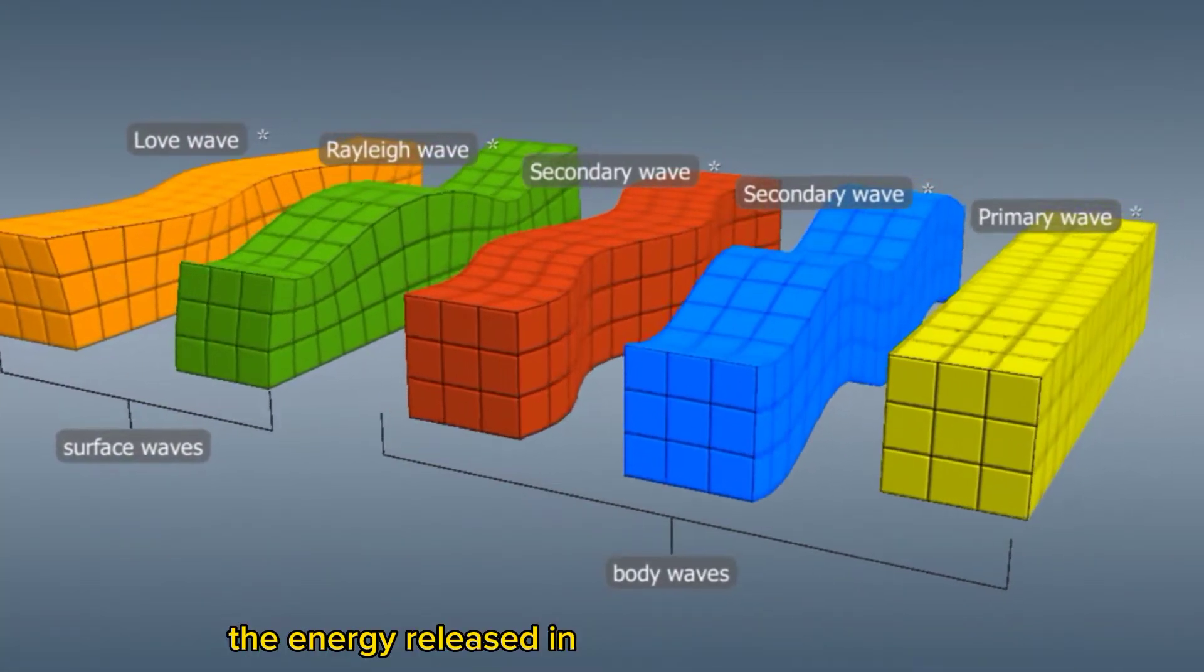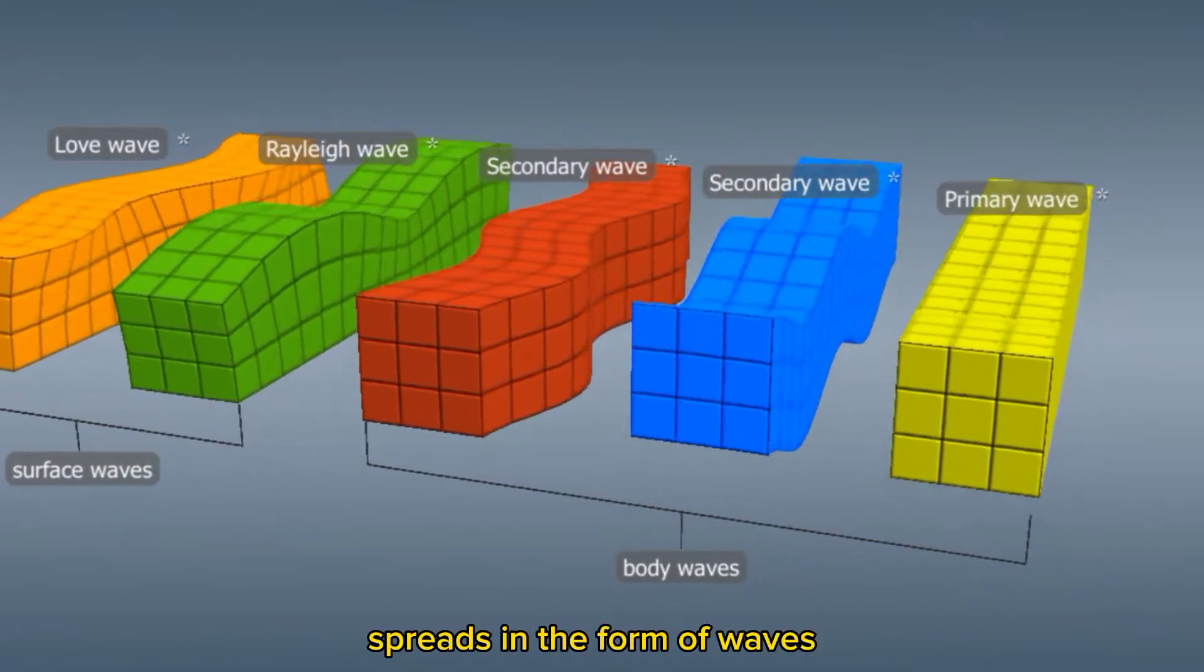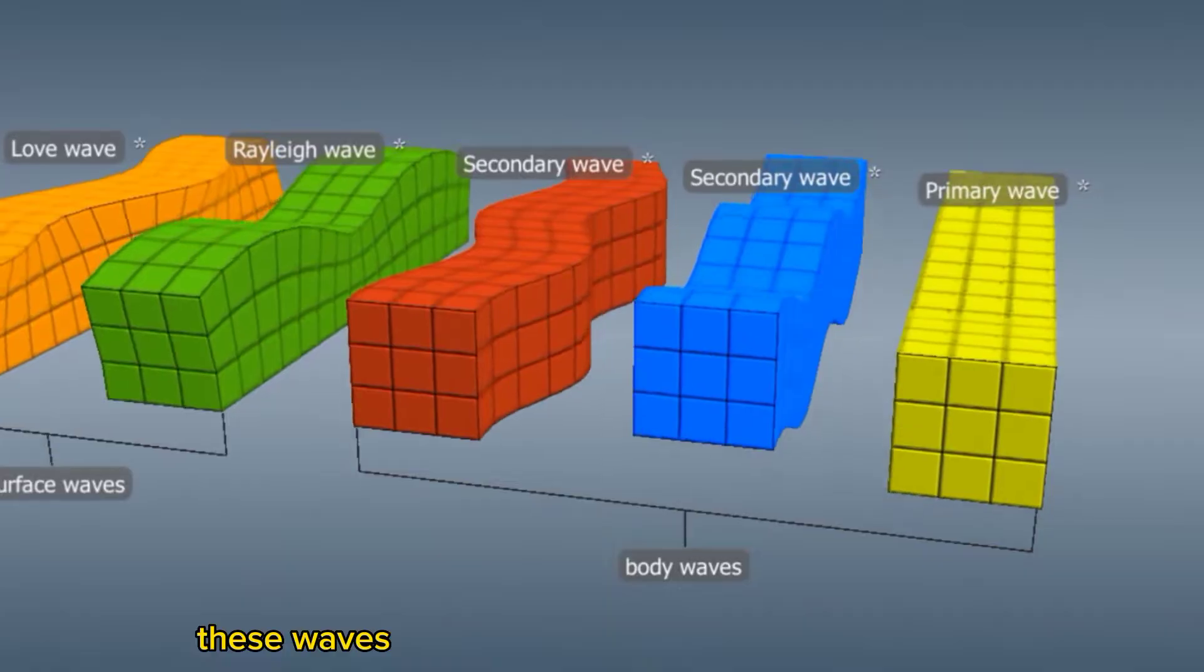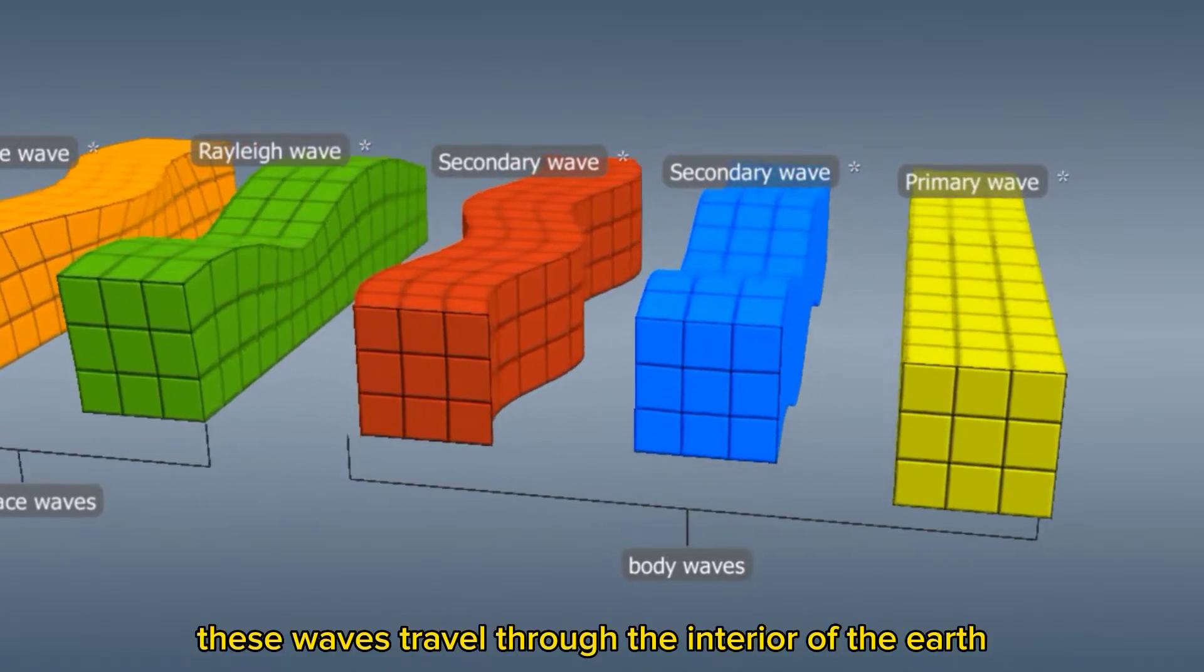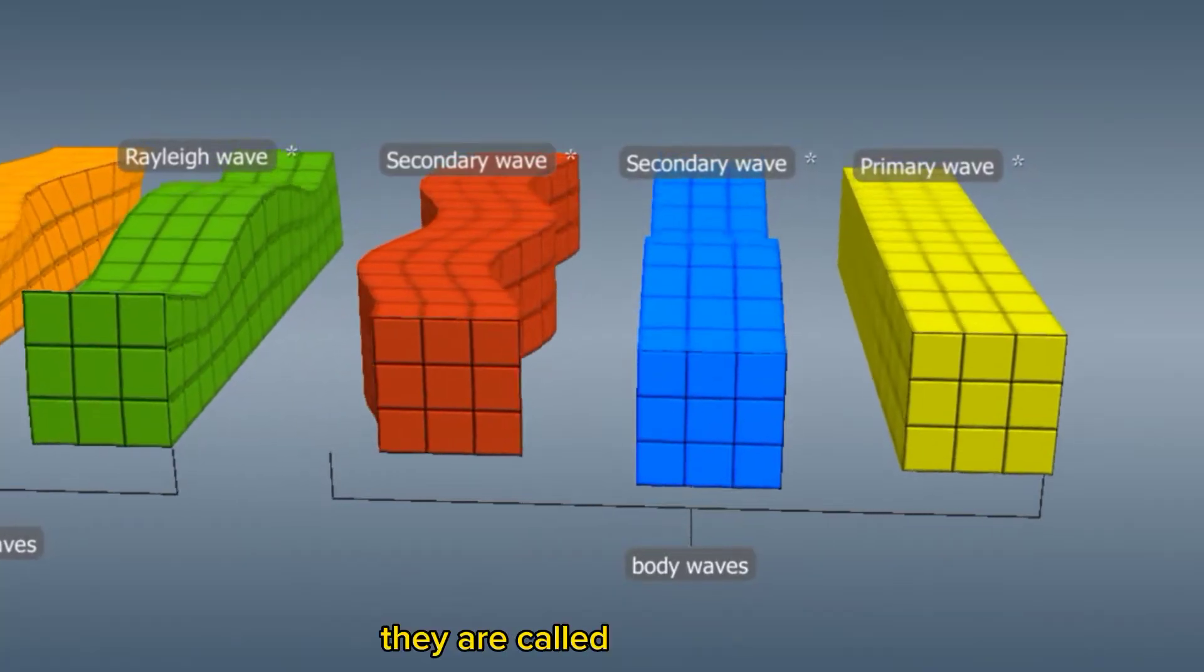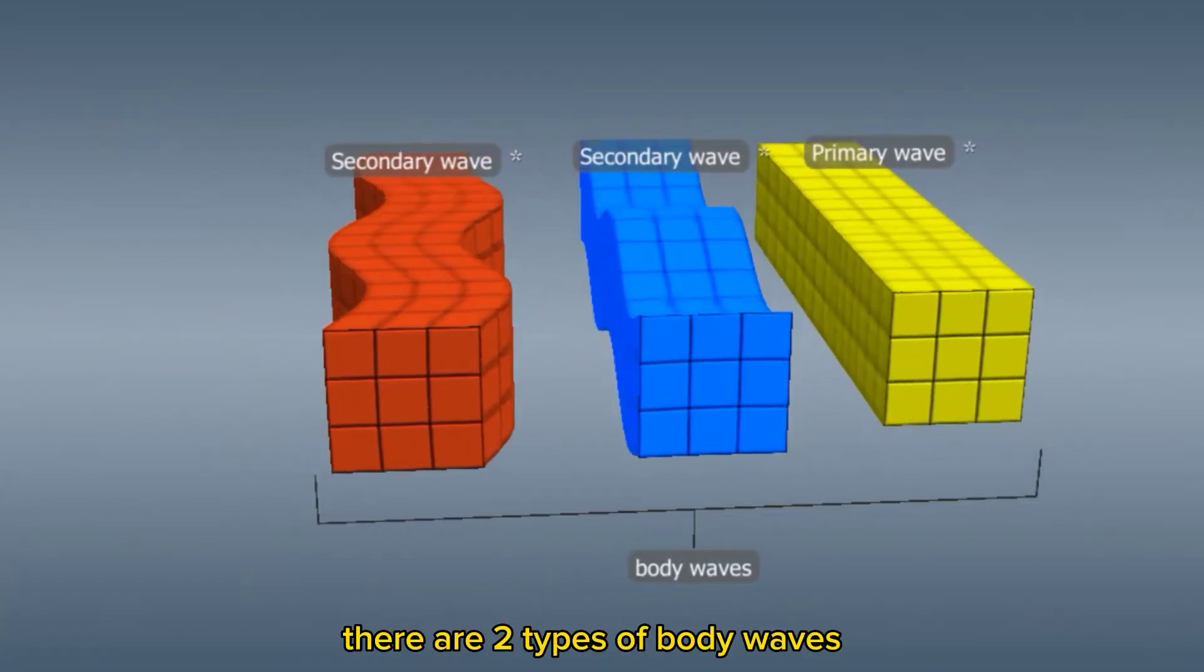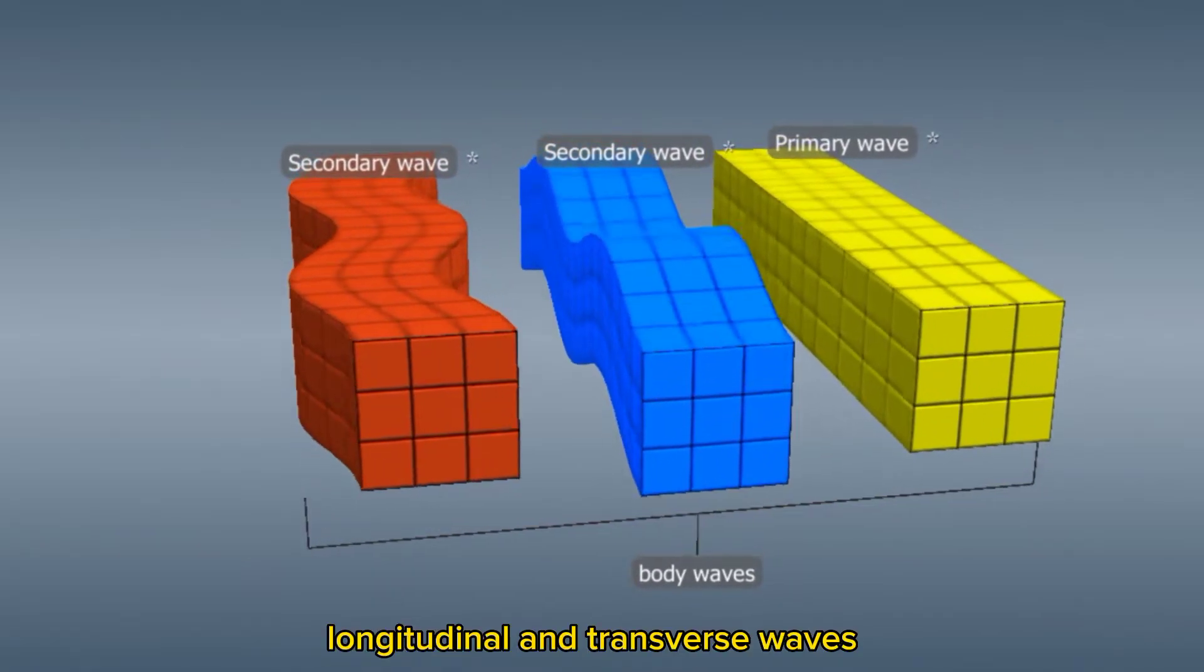The energy released in the focus or hypocenter spreads in the form of waves. These waves travel through the interior of the Earth and spread out in all directions. They are called body waves. There are two types of body waves, longitudinal and transverse waves.